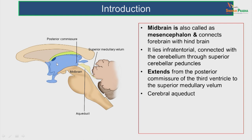The midbrain connects the forebrain with the hindbrain. The cavity of the midbrain is the cerebral aqueduct. The midbrain lies in the infratentorial part and is connected with the cerebellum through the superior cerebellar peduncles. It extends from the posterior commissure of the third ventricle to the superior medullary velum, and the aqueduct connects the third ventricle with the fourth ventricle. The cerebral aqueduct acts as the line of demarcation: anteriorly is called the peduncles and posteriorly the tectum.